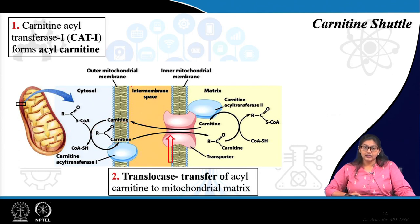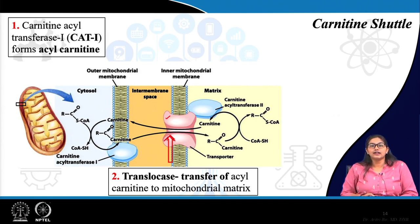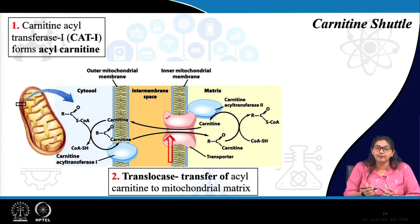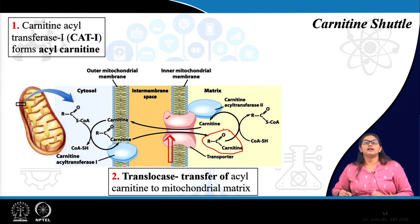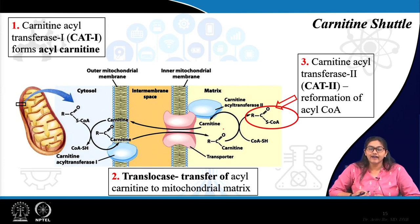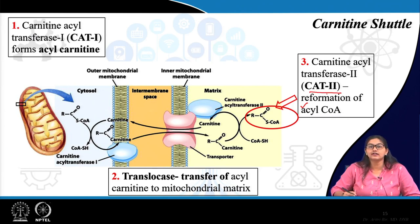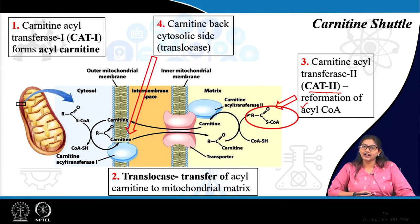Since the inner mitochondrial membrane is not permeable, a transporter called translocase is required. This translocase transfers the acyl carnitine complex from the intermembranous space to the mitochondrial matrix. Inside mitochondria, fatty acyl coenzyme A is reformed by another enzyme — carnitine acyl transferase 2 (CAT2). The carnitine then goes back to the cytosolic surface via the translocase enzyme.